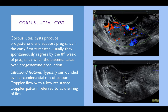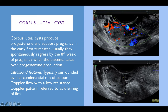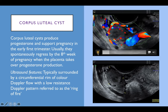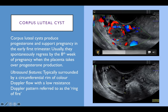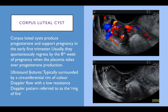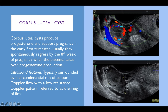The corpus luteum is important because it produces progesterone and supports the pregnancy in the early first trimester, usually spontaneously regressing by the 8th week when the placenta takes over progesterone production. This image demonstrates quite nicely the circumferential rim of colour known as the ring of fire — a ring of blood vessels surrounding the corpus luteum. Corpus luteum cysts can be quite large but commonly regress by the end of the first trimester.